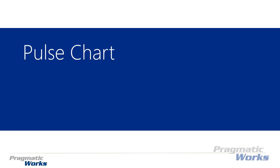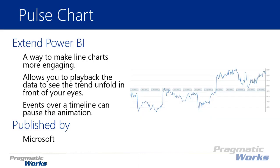Welcome back to the Power BI Custom Visuals course. In this module we're going to be looking at the Pulse Chart, which is an extended or enhanced way of doing a line chart. It's great at showing trends in your data and making it more engaging with playback features. You can animate your line chart over time and even have pauses when certain events occur. We'll look at the U.S. stock market — specifically the S&P 500 — and see what economic events caused increases or decreases, watching those trends unfold using the animation features.